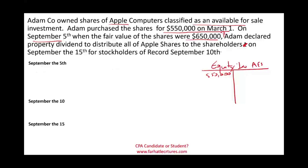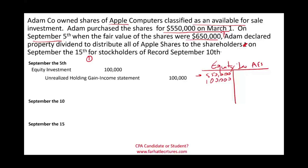So what do we do first? The shares went from $550,000 to $650,000. When you distribute property, the first thing you have to do is adjust the property to fair market value. We record a gain of $100,000 — the difference between $550,000 and $650,000. We debit equity investment $100,000 and credit unrealized holding gain (income statement) $100,000. Then since we declared the dividend, we debit retained earnings $650,000 and credit property dividend payable $650,000.